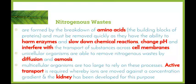We need to have other processes in place. Active transport is required, and during active transport ions are moved against a concentration gradient. In diffusion and osmosis, substances simply move from where there's lots of them to where there's few of them, whereas in active transport substances move from where there's few to where there's more. This takes place in the kidney, which has been developed for the purpose of active transport to get rid of substances we don't require.